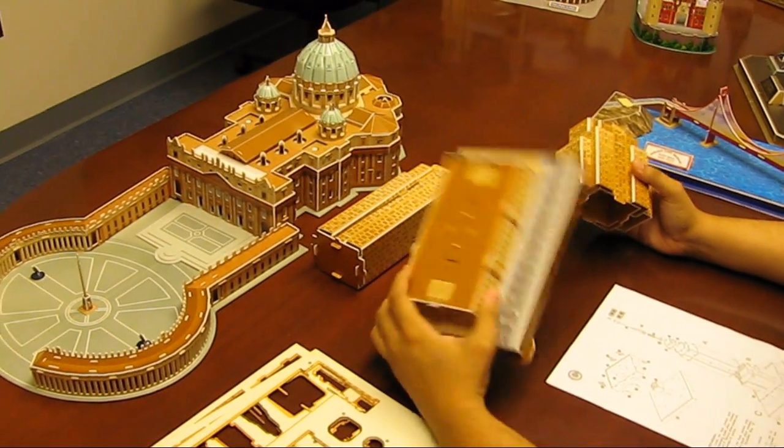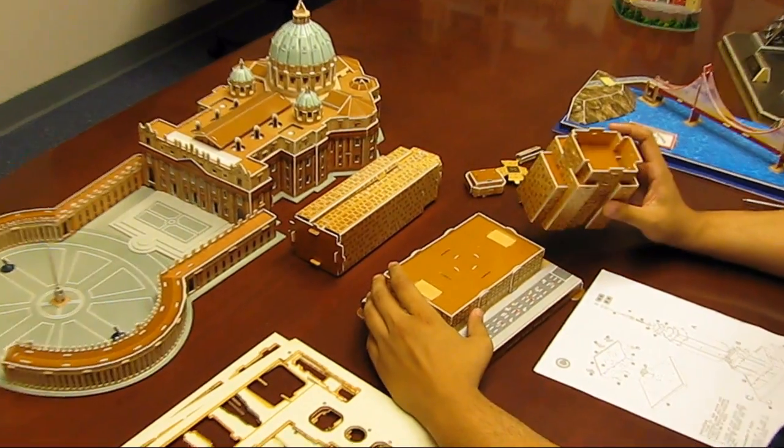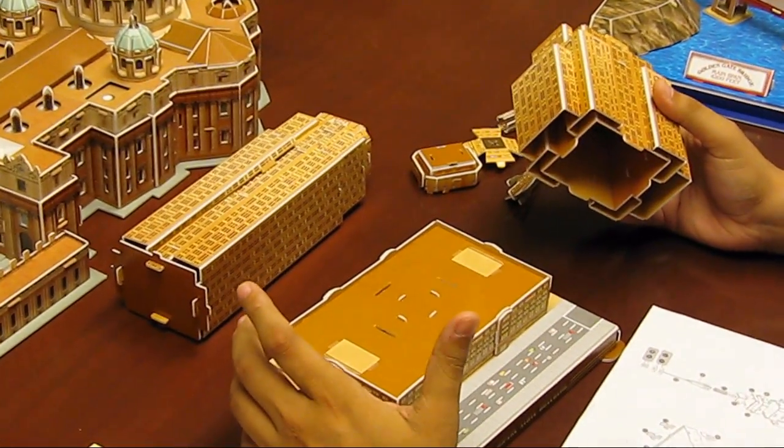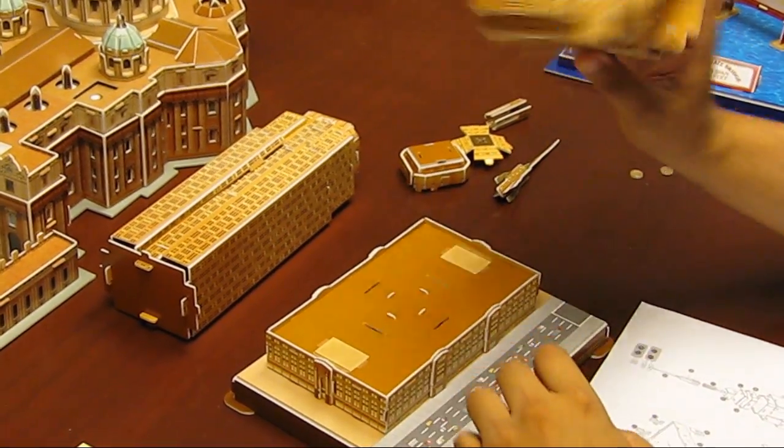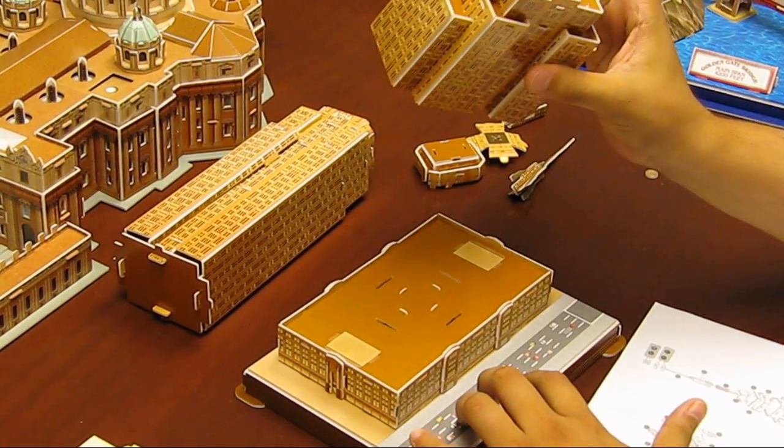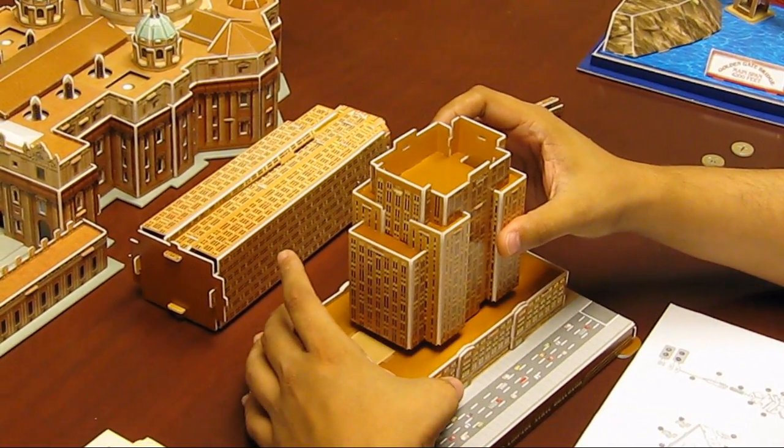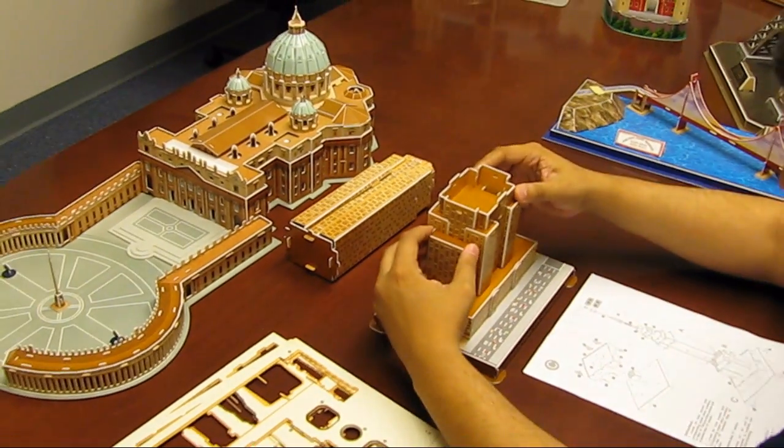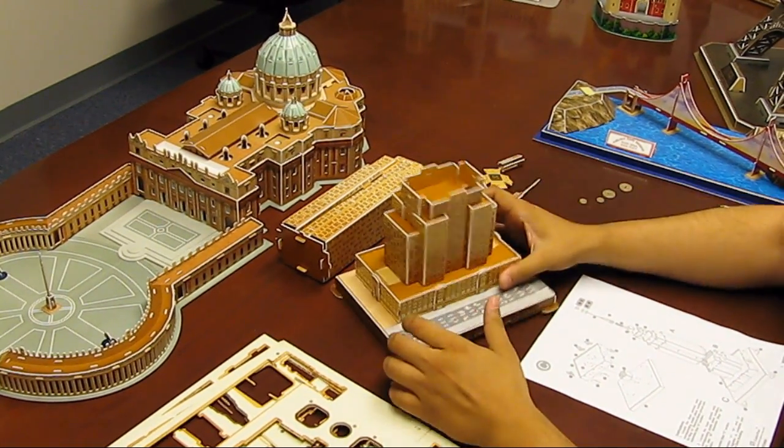We have all four pieces constructed. Now what we want to do is stack them on top of one another. We've got the base already done. Here is our mid section. So what you want to do is just put that on top. Secure it. Now you have the bottom part.